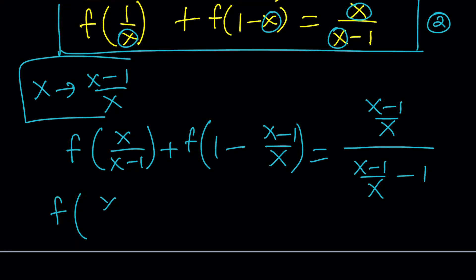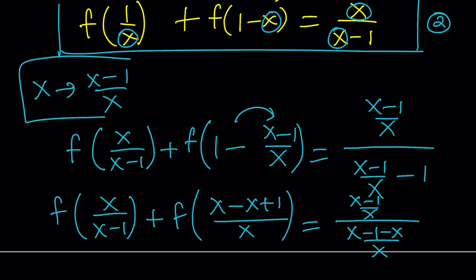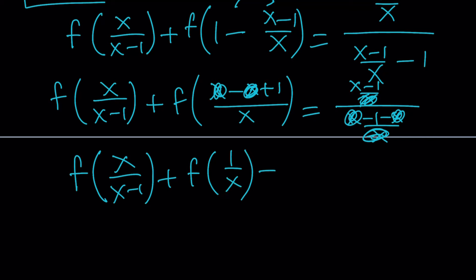So f of x over x minus 1 plus — here you can simplify this as x minus x plus 1, because when you subtract a minus sign you make it a plus sign. And here we can make a common denominator again: x minus 1 minus x over x. x cancels out, then the denominators cancel out. x minus 1 over negative 1 gives us 1 minus x. So we have f of x over x minus 1 plus f of 1 over x equals 1 minus x. This is going to be our third equation.